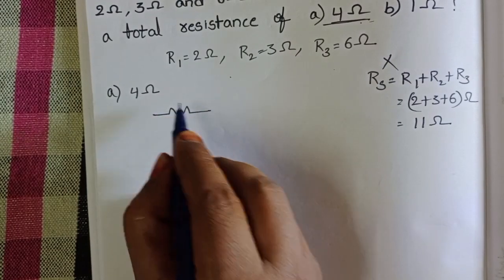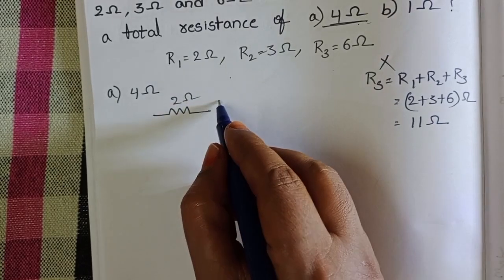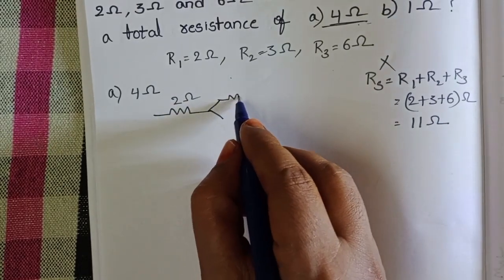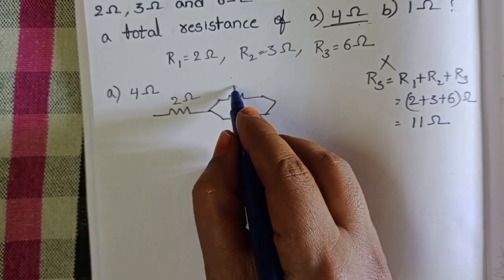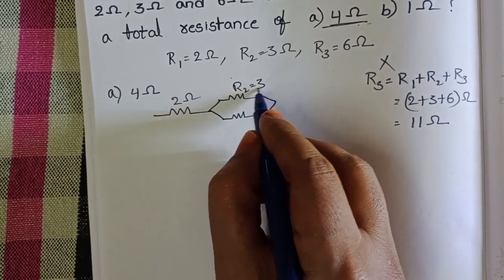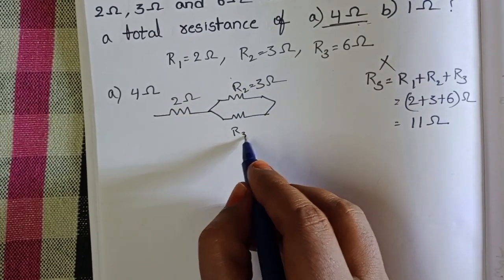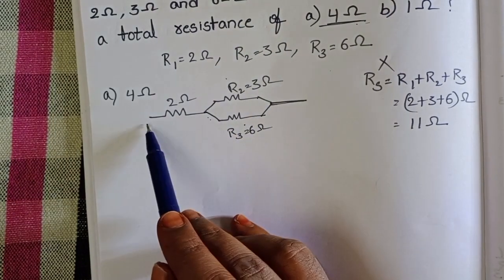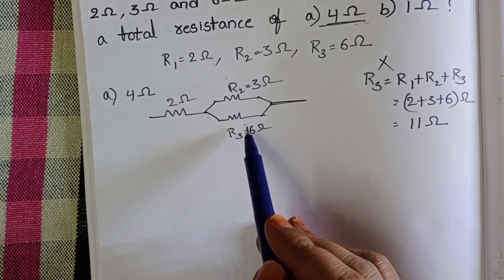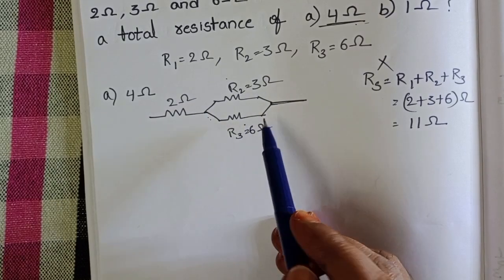Take the first resistor, 2 ohms and second and third resistors. These two are connected in parallel. R2, 3 ohms. Here R3 is 6 ohms. Second and third resistors are connected in parallel and first resistor is in series combination with the remaining two resistors.